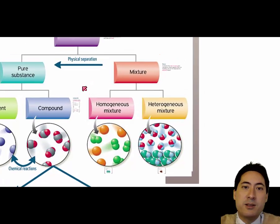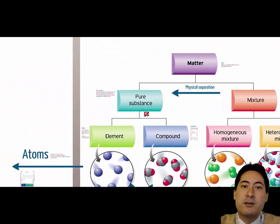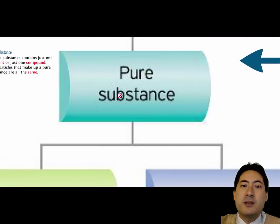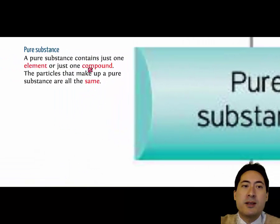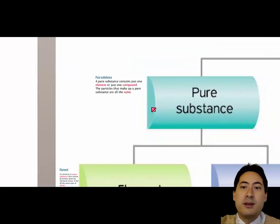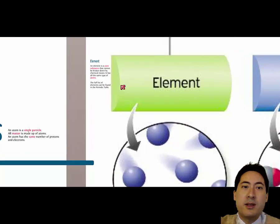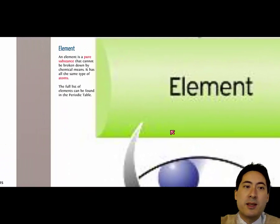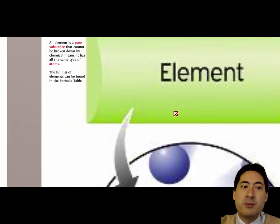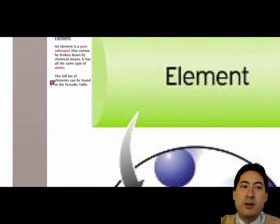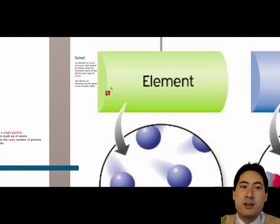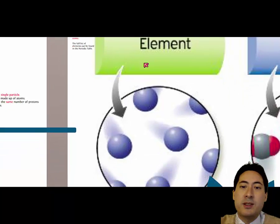So let's get off mixtures then and go on to pure substances. A pure substance is something that just contains one type of particle which could be an element or a compound. Now let's go to elements first. An element is a pure substance that cannot be broken down by chemical means. It has all the same type of atoms and if you go to your periodic table you'll see all the different types of elements that you can have.